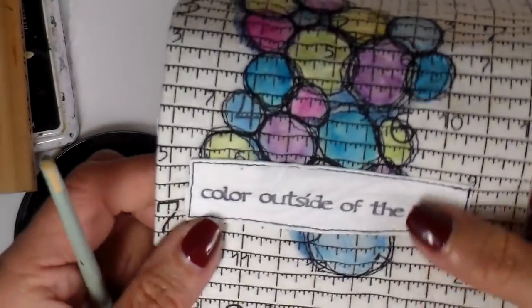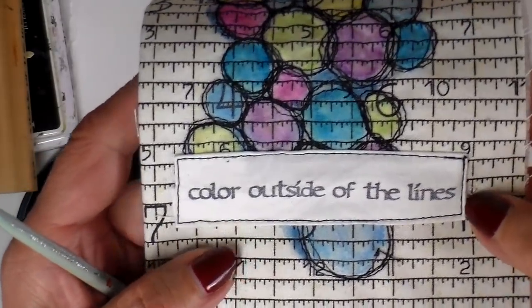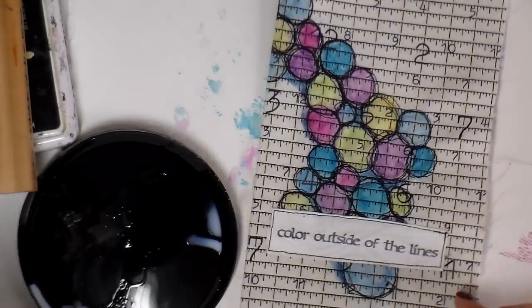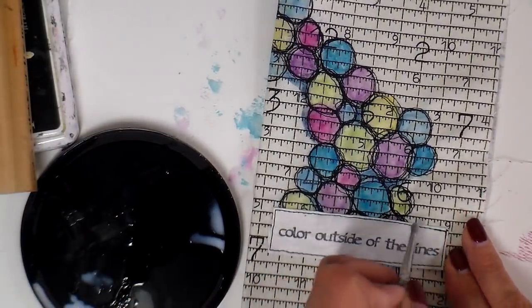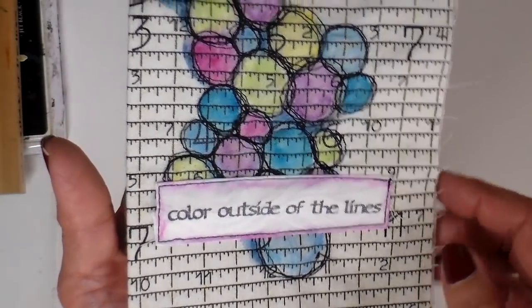I am going to outline the little words with probably the pink Neocolor 2. I'm going to do that right now. First adding the fabric medium. Now to heat set it one more time.